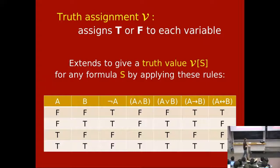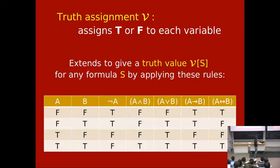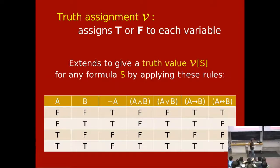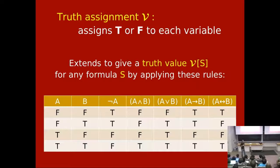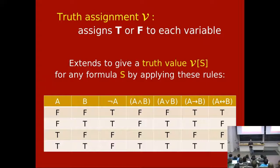In general, when reasoning about propositional logic you have a truth assignment V, which assigns true or false to each variable — corresponding to whether each statement is true or false in the world. Once you've done that you can evaluate any sentence using those variables. You evaluate it inductively using this table covering all five connectives: not, and, or, implies, and if-and-only-if. Not A is the opposite of A; A and B is true only if both are true; A implies B is always true unless A is true and B is false; A if-and-only-if B is true if they have the same truth value.